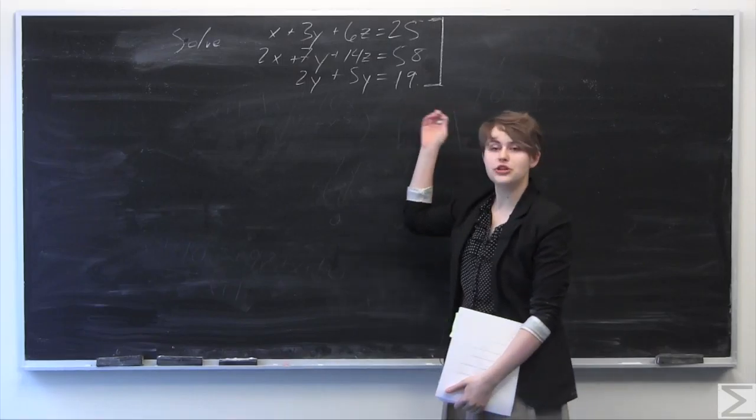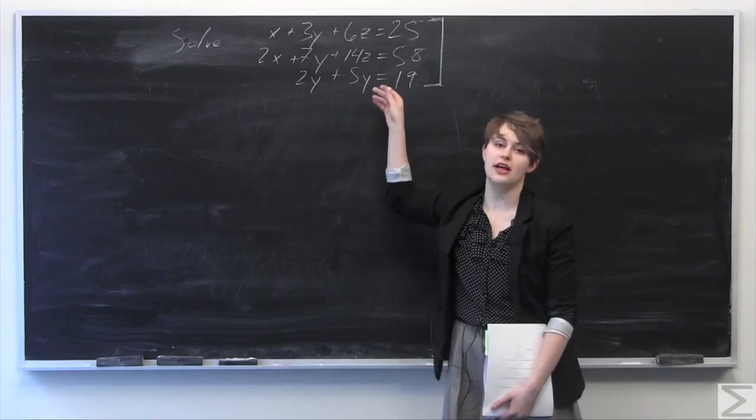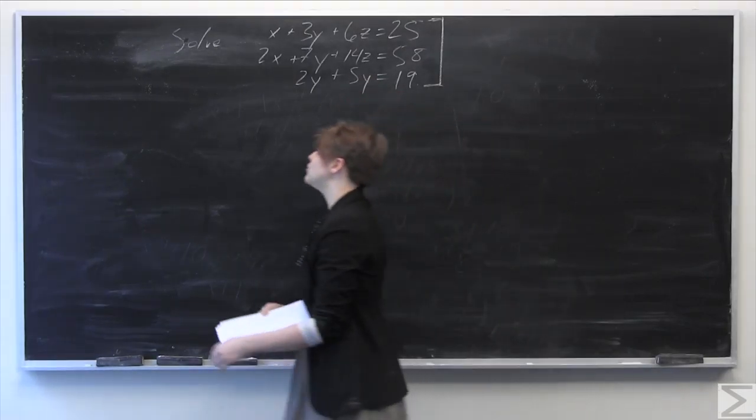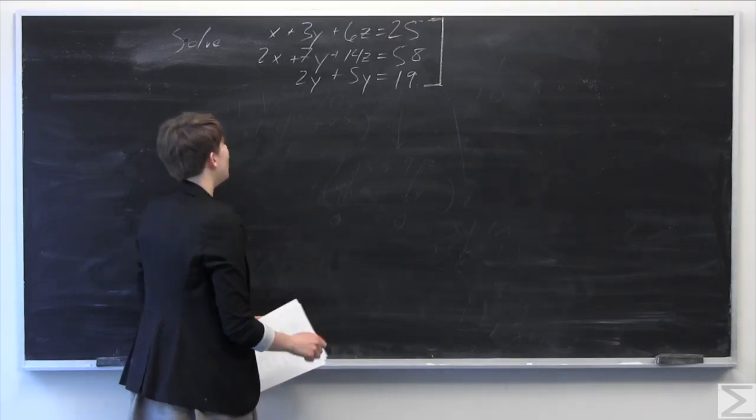We're going to use elementary row operations to cancel out variables from the bottom up and then solve for x, y, and z. Assuming that this system is consistent and has a solution, which in this case it does, as we will see later.